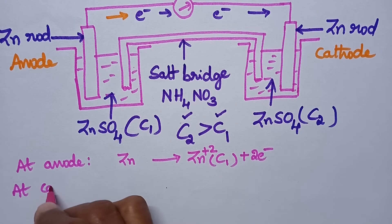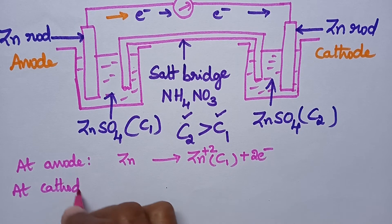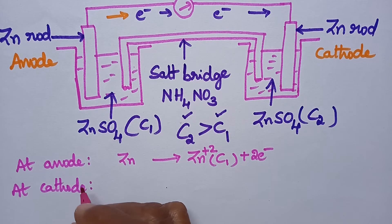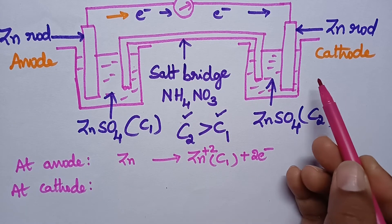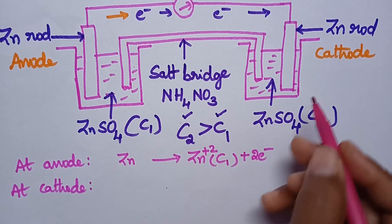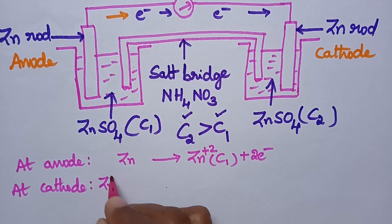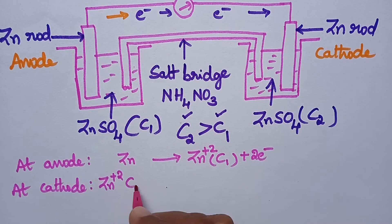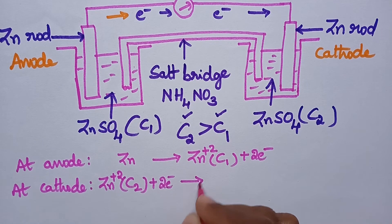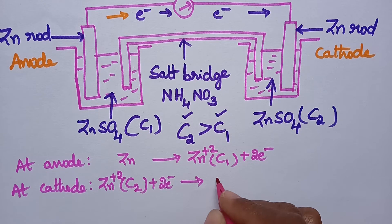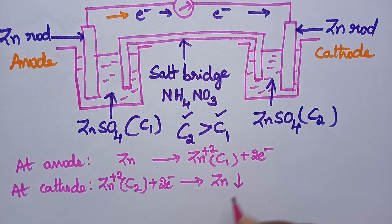At the cathode, always reduction takes place. The right-hand side electrode acts as the cathode. Here the Zn²⁺ ions from the C2 solution will gain electrons and get converted into Zn — that means it will be reduced into zinc.